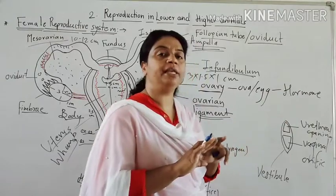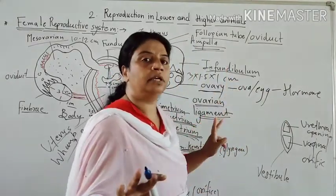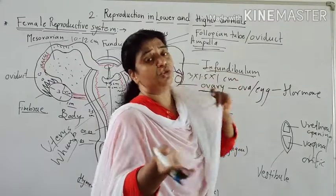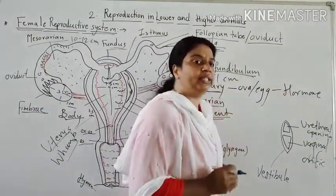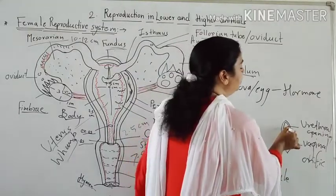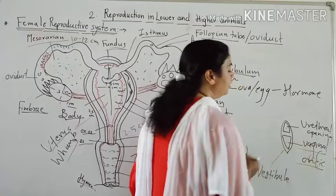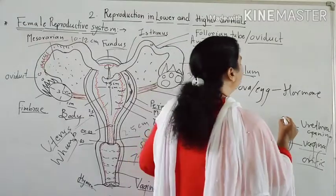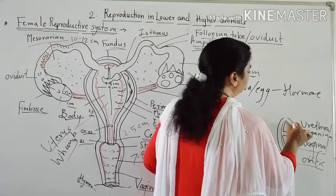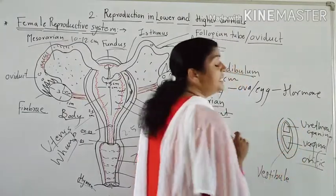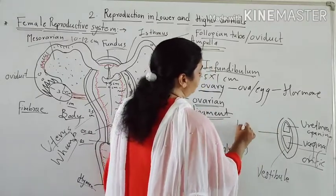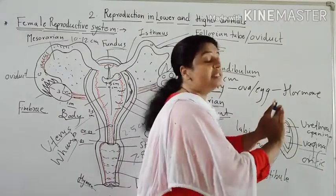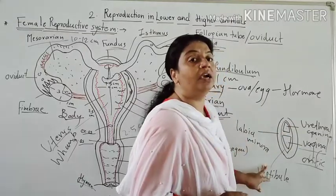In the female, the excretory system and reproductive system are separate, with a separate urethral opening and vaginal opening. But in the male, the reproductive system is joined with the excretory system through the urethra. The vestibule depression is covered by small thin skin folds called the labia minora.